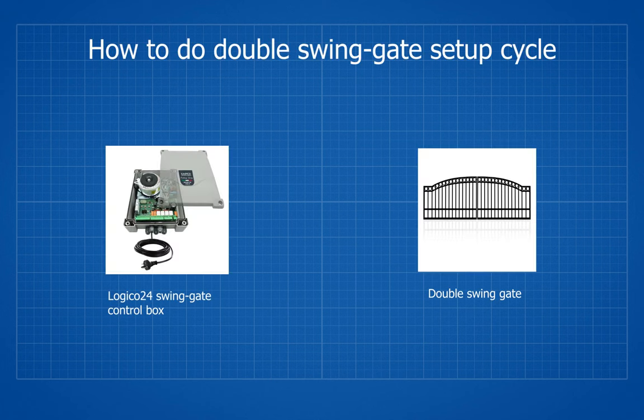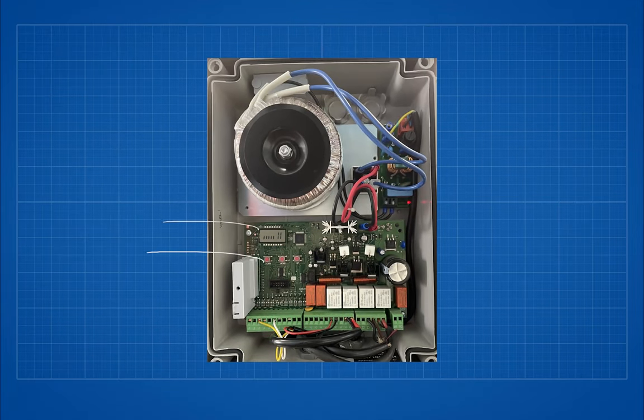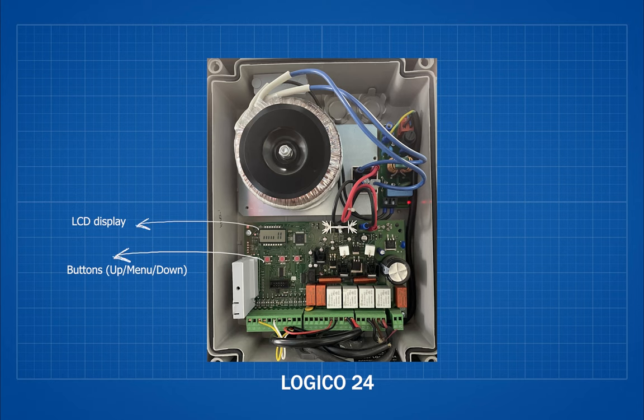In this video we will perform full gate setup cycle. First move both the gates midway by manual override. Thereafter we will run the first command on the control board. We will use these three buttons and the display.